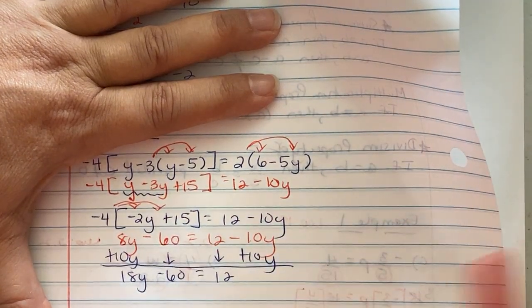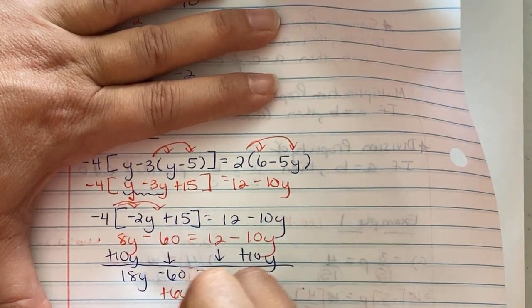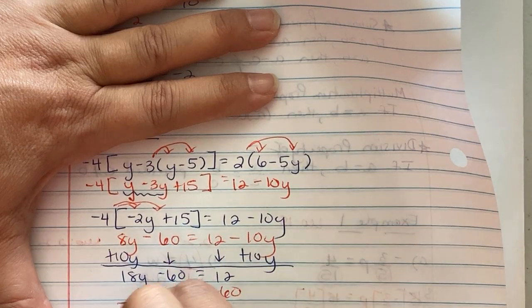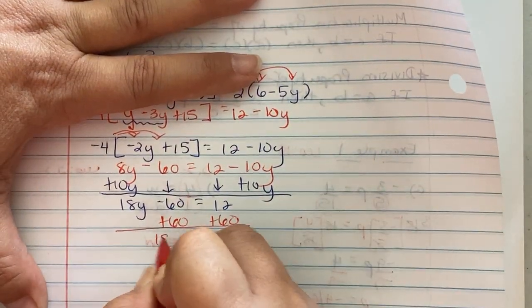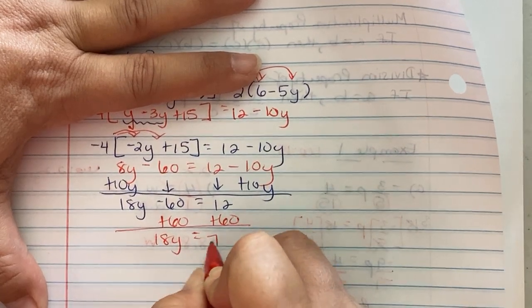Again, we're going to move the 60. It's negative 60, so we're going to do the opposite, which is positive 60. So we get 18y equaling 72.